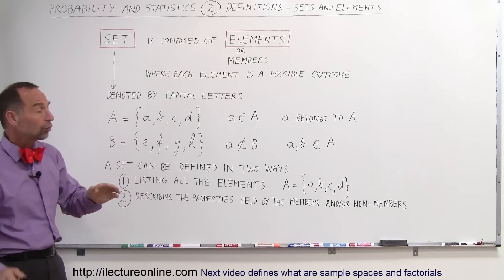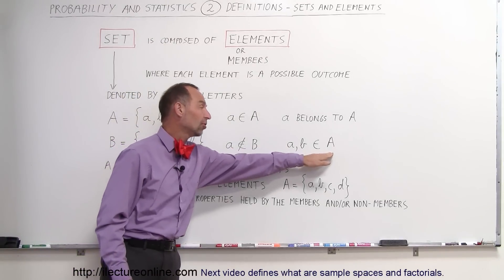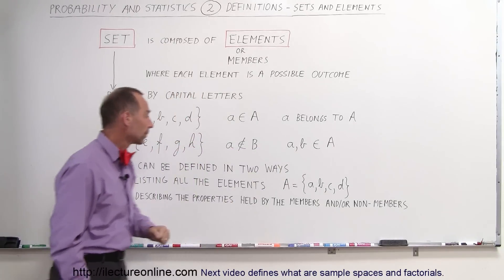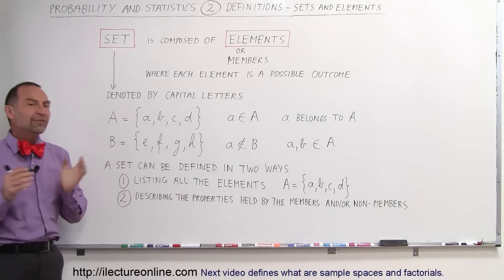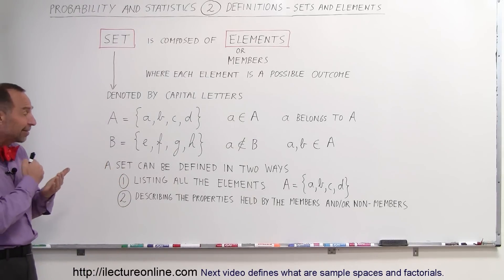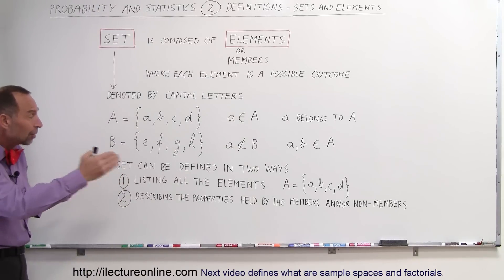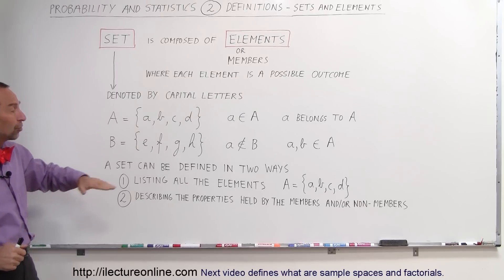We can also write that both a and b belong to set A. A set can be defined in two ways: either we can simply list out all the elements, just like we indicate here.